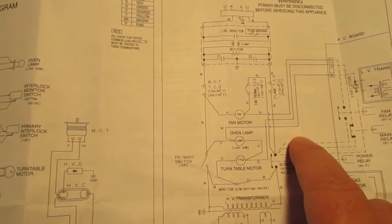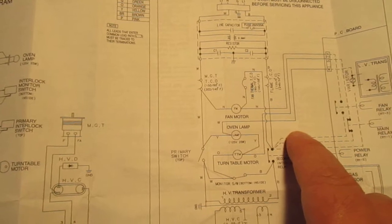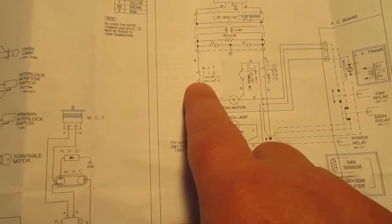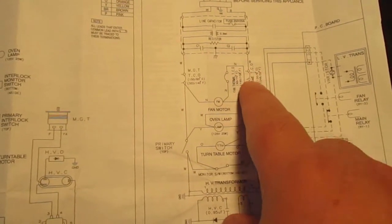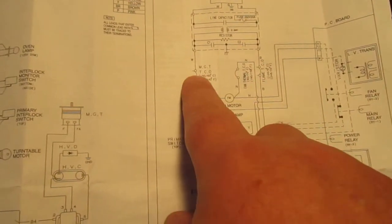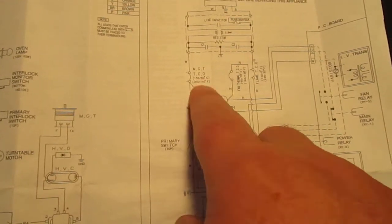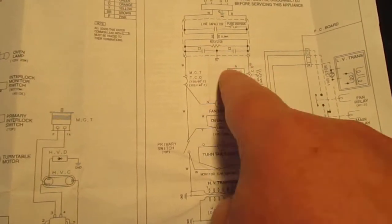But yes, normally closed, normally closed, you will see continuity across both of these thermal cutoffs. You will not see it on this one. This will appear to be an open circuit.